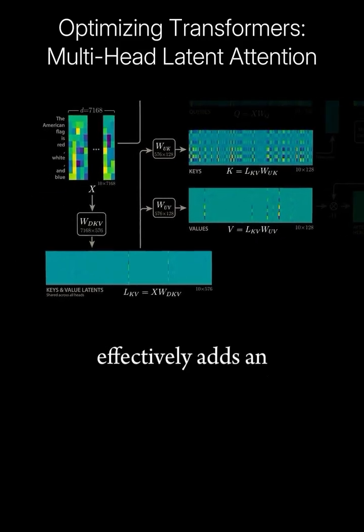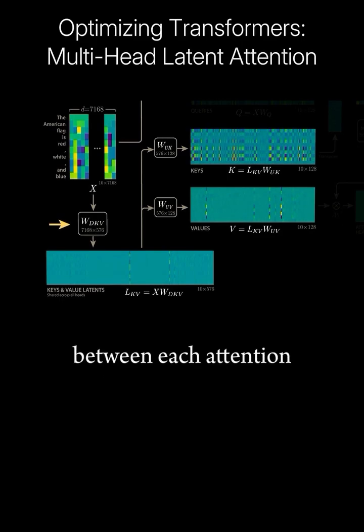Multi-head latent attention effectively adds an extra step between each attention head's input and the key and value matrices. The idea is to project our input into a compressed latent space that is shared across all attention heads in a given block.